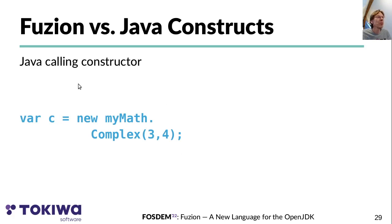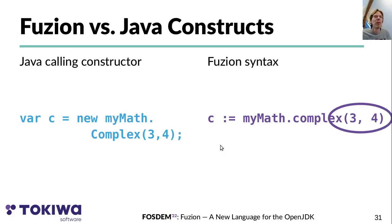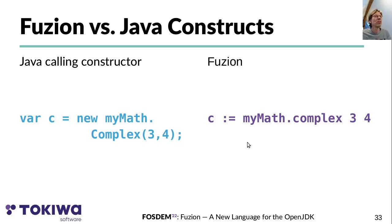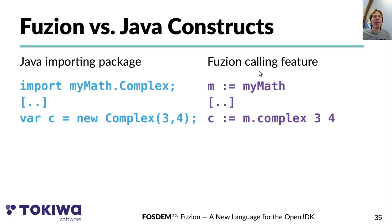Some examples of how you would write code using this class: in Java you call a constructor; in Fusion you call a feature — actually two features. You call the unit feature 'my_math' (which generates no code) and then call 'complex' with arguments three and four. Parentheses and commas in calls are optional in Fusion. The counterpart to an import statement in Fusion is just an assignment: you assign the unit value 'my_math' to a new field called 'm'. Since 'my_math' instances require no memory and copying them requires no code, this is all transparent in the generated code.